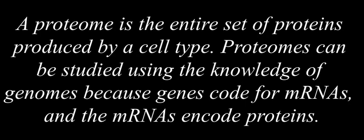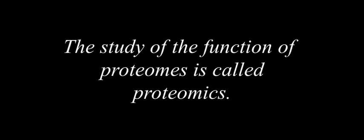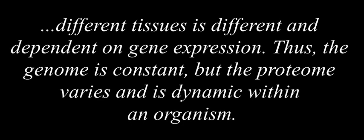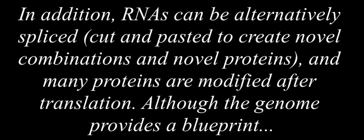A proteome is the entire set of proteins produced by a cell type. Proteomes can be studied using the knowledge of genomes because genes code for messenger RNAs and the messenger RNAs encode proteins. The study of the function of proteomes is called proteomics. Proteomics complements genomics and is useful when scientists want to test their hypotheses that were based on genes. Even though all cells in a multicellular organism have the same set of genes, the set of proteins produced in different tissues is different and dependent on gene expression. Thus, the genome is constant but the proteome varies and is dynamic within an organism. In addition, RNAs can be alternatively spliced to create novel combinations and novel proteins, and many proteins are modified after translation.